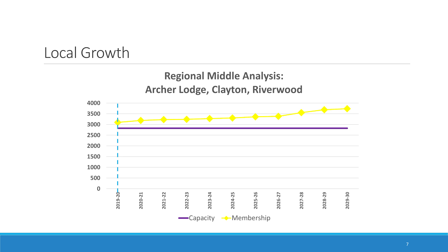There is no perfect solution when it comes to redistricting in this region, particularly because you are not adding additional capacity beyond the recent addition to Archer Lodge. What we as the planning team are trying to do is alleviate the need for as many mobile units at some of your schools as possible by helping balance those student populations and get more students back into the buildings.